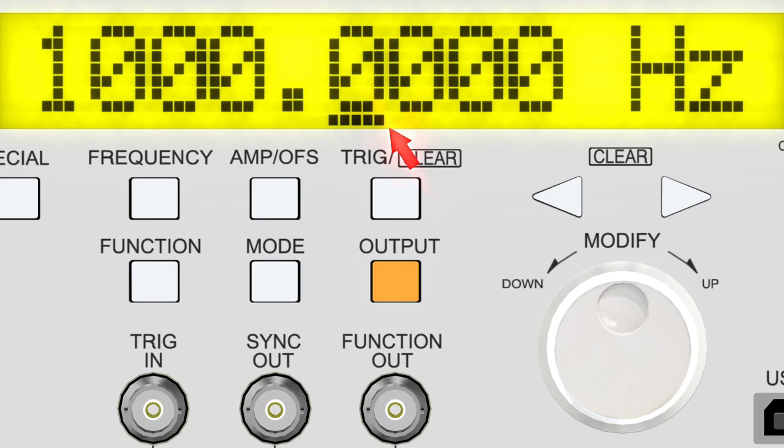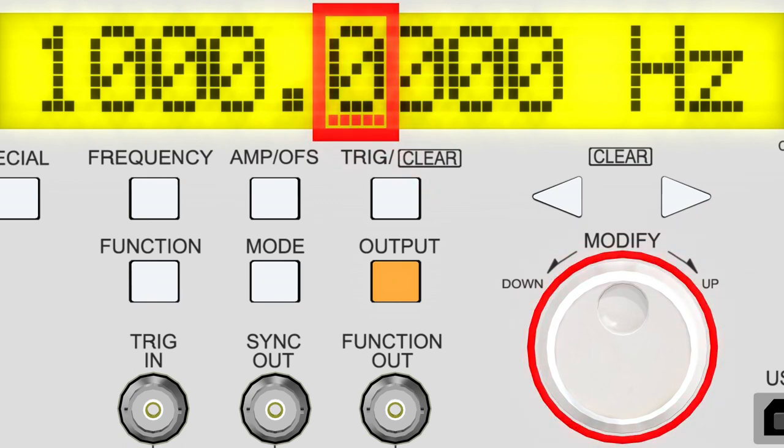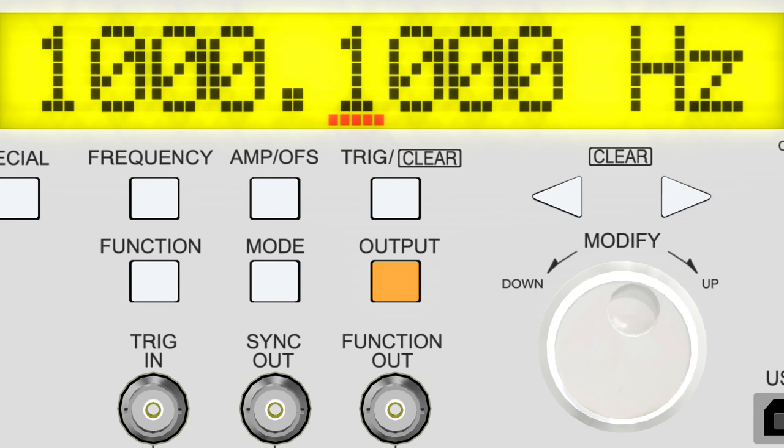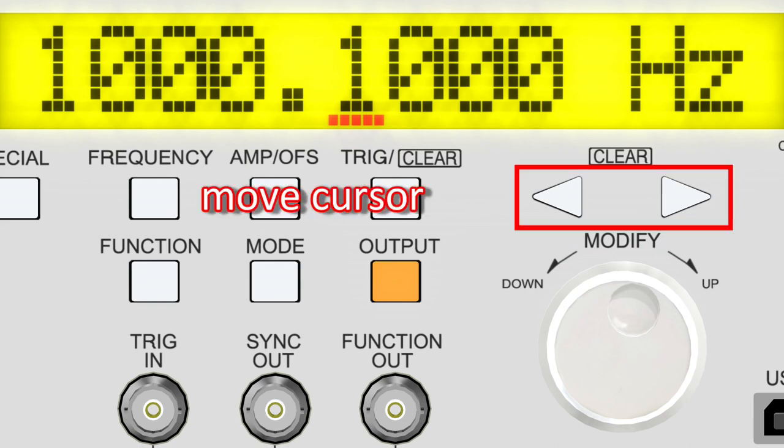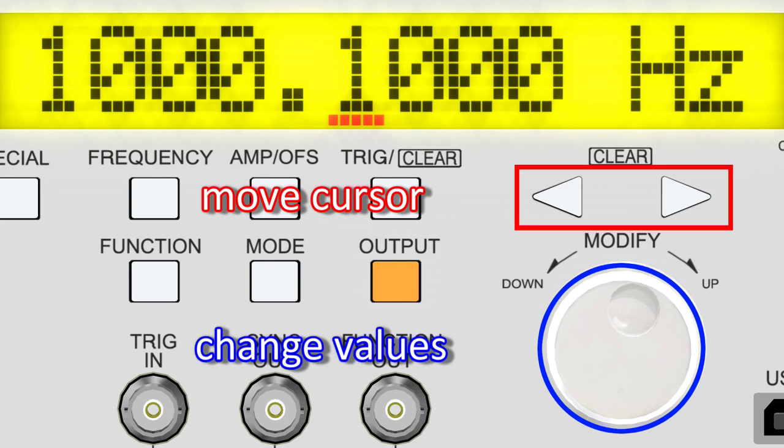For clarity, the cursor is indicated by a red underline. Turn the dial labeled Modify to the right to increase the value. Turning it to the left will decrease the value. In this oscillator operation, use the arrow keys to move the cursor, and use the Modify dial to change the settings of other values and units.